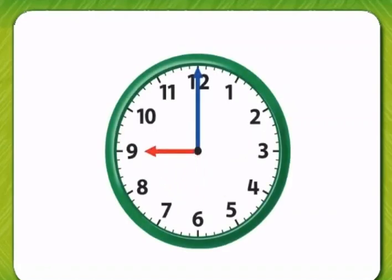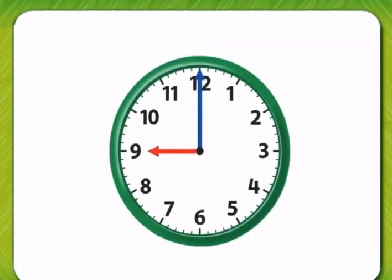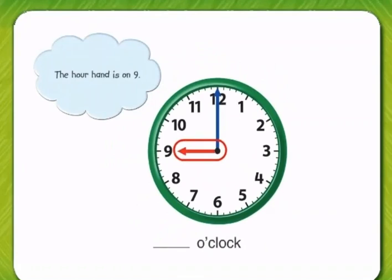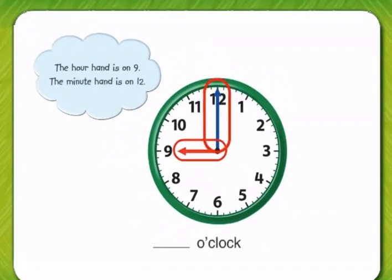Look at the clock. What time is it? The hour hand is on 9. The minute hand is on 12. The new hour starts on 12, so there are no minutes to count. It is 9 o'clock.